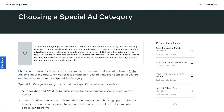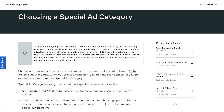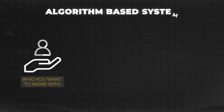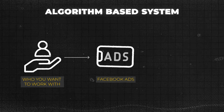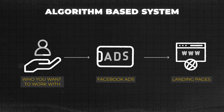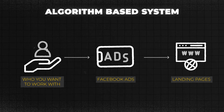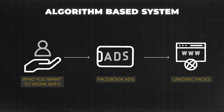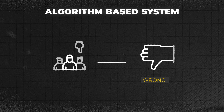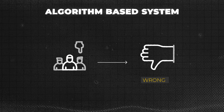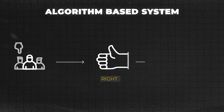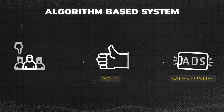This is actually potentially better for you if you know how to advertise on Facebook the right way. With an algorithm-based system, you need to make sure more than ever before that you call out exactly who you want to be working with inside your Facebook ads or on the landing pages you send people to. The reason this is so important is because you want to filter out the wrong type of people and make sure only the right people see your ads and enter your sales funnel.